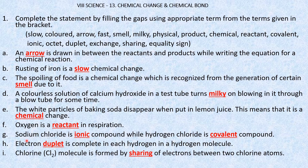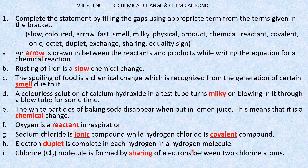Sodium chloride is an ionic compound while hydrogen chloride is a covalent compound. In a hydrogen molecule, the electron duplet is complete in each hydrogen atom — two hydrogen atoms combine together, so each hydrogen atom gets two electrons, making a duplet. H2.